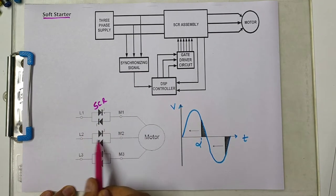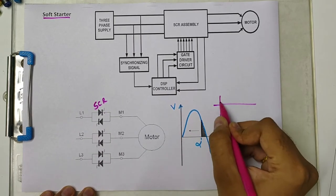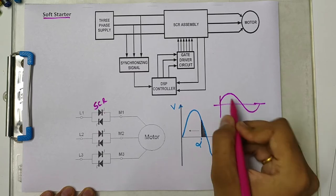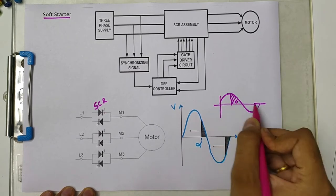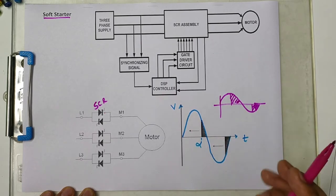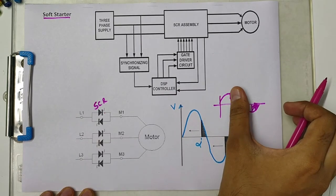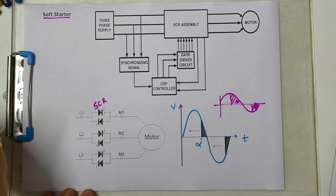For example, if this is the supply voltage and we are increasing the value of alpha, then more voltage will be cut out here. The thyristor will stop conducting earlier.